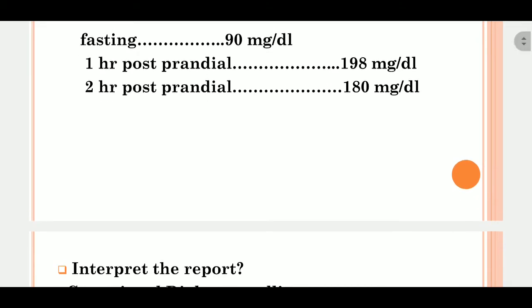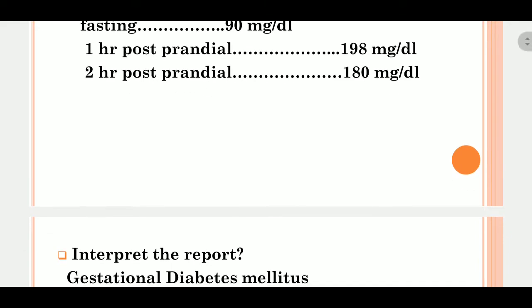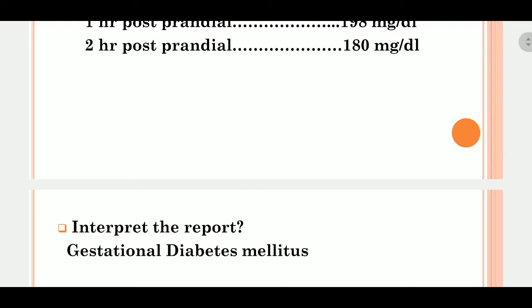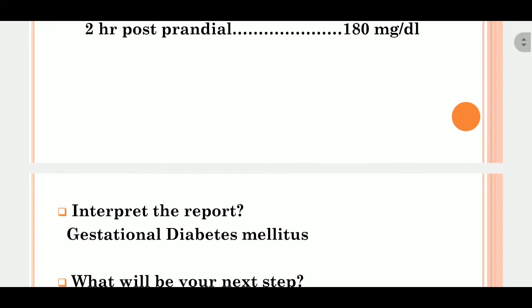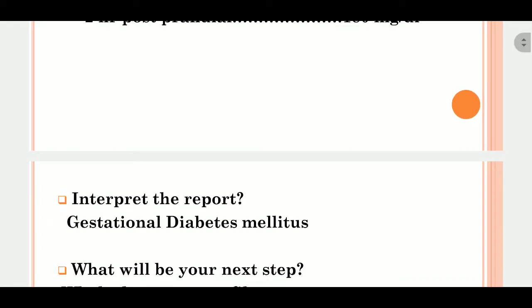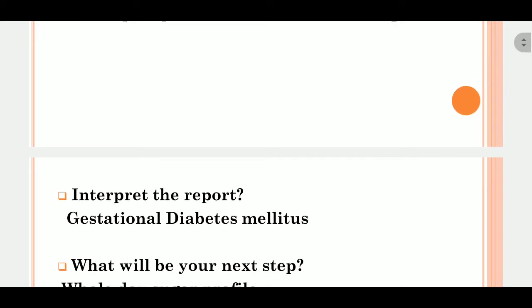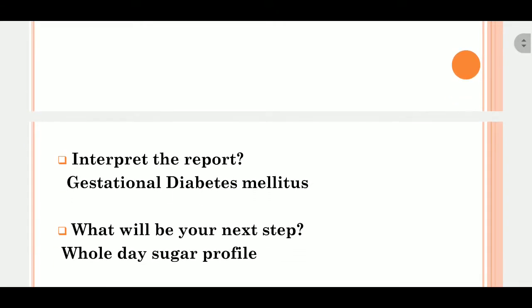The first question the examiner would ask is: interpret the report. We would say that the patient has got diabetes mellitus. The next question is: what is the next step? The answer would be to hold a sugar profile — ideally, you would admit this patient in the ward for sugar charting and a full sugar profile.